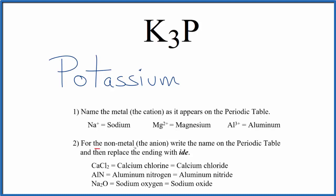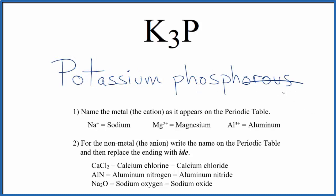Next we write the name for the nonmetal as it appears on the periodic table. P, that's phosphorus, and then we're going to cross out the ending, the O-R-O-U-S, and write I-D-E.